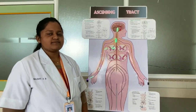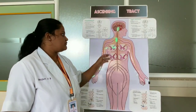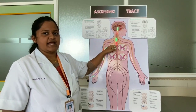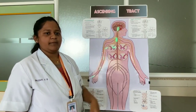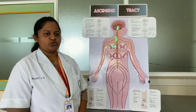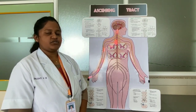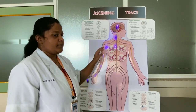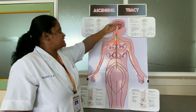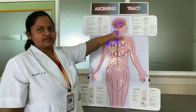The lateral spinothalamic tract has a crossed fiber course. Axons from the marginal nucleus and substantia gelatinosa cross to the opposite side and reach the lateral column of the same segment. These fibers may ascend one or two segments before crossing to the opposite side and ascending in the lateral column. All fibers pass through the medulla oblongata, pons, and midbrain, and reach the thalamus along with the anterior spinothalamic tract.